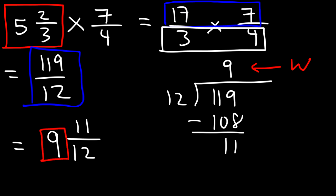So this is equal to 9 and 11/12. This becomes the whole number which you can see here, and this is the remainder. The denominator always stays the same when converting an improper fraction to a mixed number.